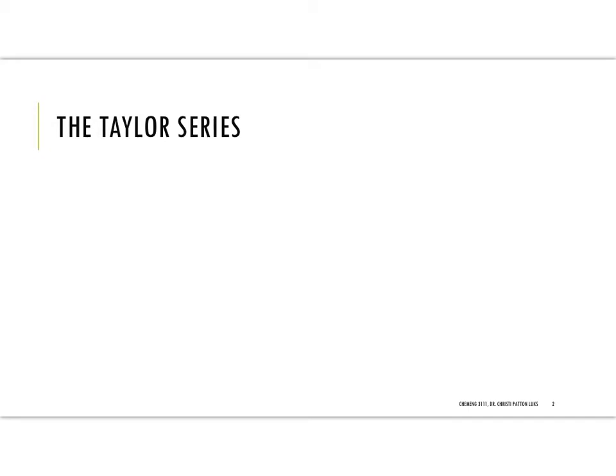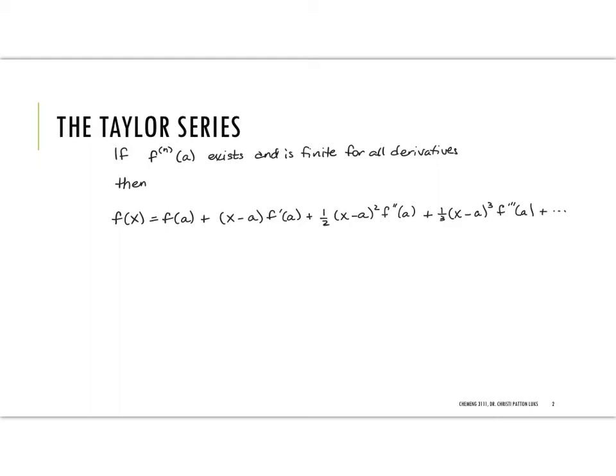So the Taylor series is going to be an expression that is the equivalent to a function when you have certain conditions met. We want to have all of the derivatives, the nth derivatives as indicated here, evaluated at some point a exist and be finite for all possible derivatives. In that case, we find that f of x is equal to f evaluated at that value a plus x minus that constant a times the first derivative of a plus one-half x minus a squared the second derivative of a, plus one over three factorial x minus a cubed third derivative of a, etc. all the way up. In fact, the general term is one over k factorial x minus a to the kth power, the kth derivative of f evaluated at a.